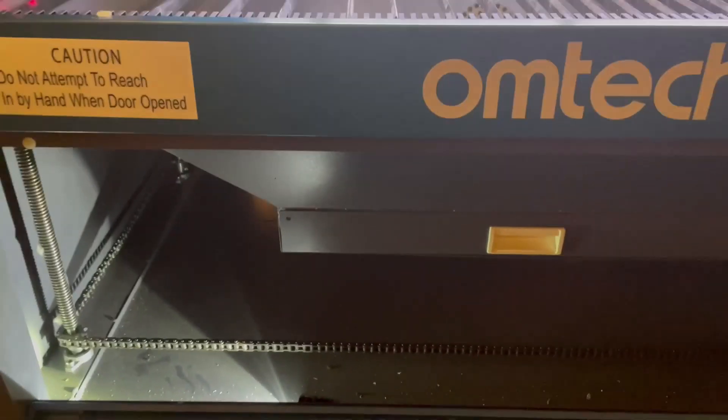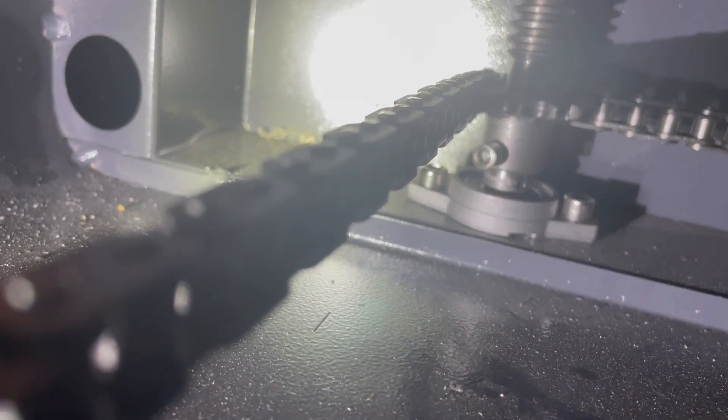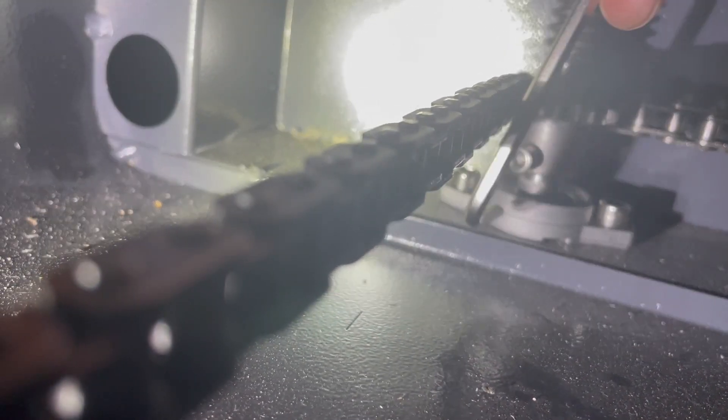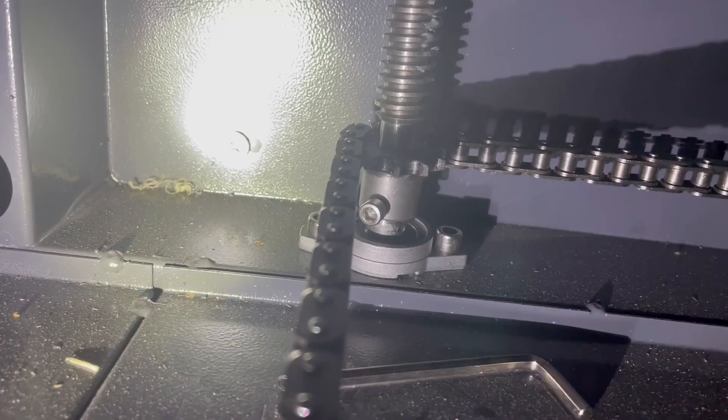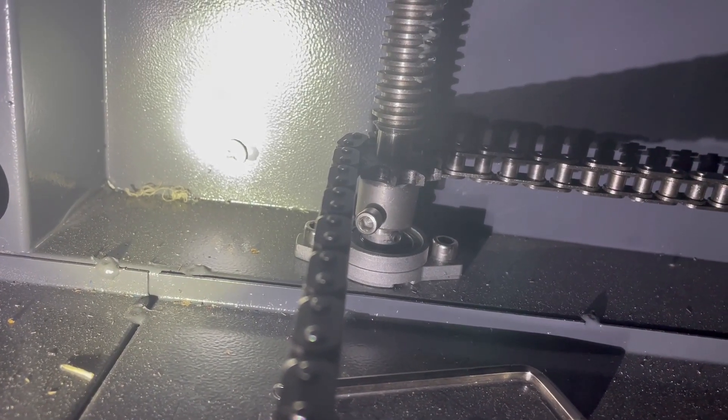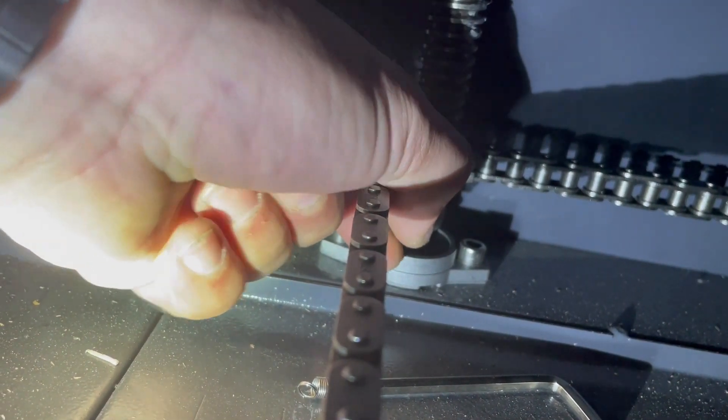So here we are underneath the machine. This is what controls the height of that front corner. We're going to get in here and loosen that hex nut. All right, so I just got it loose. I didn't take it out. You can move it with your fingers. It is most definitely loose.